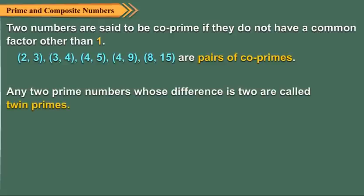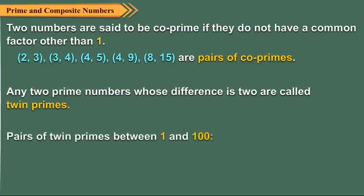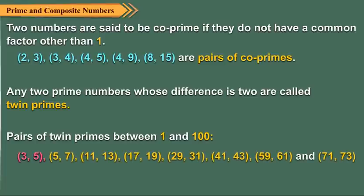Any two prime numbers whose difference is two are called twin primes. Pairs of twin primes between 1 and 100 are (3, 5), (5, 7), (11, 13), (17, 19), (29, 31), (41, 43), (59, 61) and (71, 73).